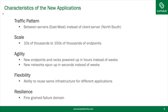Along with that has come a huge increase in the number of networks. Today in a cloud it's not 4,000 VLANs — it's theoretically 16 million virtual networks, and many designs are pushing even beyond that. And part of this requirement means people want agility: new endpoints and racks powered up in hours instead of weeks, and new networks spun up in seconds instead of weeks.